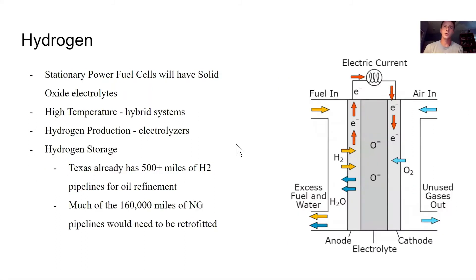Hydrogen is a renewable fuel that can either be burned or used in a fuel cell to produce power. It can be made from natural gas through steam reforming, but the current natural gas supply is fracked and therefore not renewable. The best alternative to create renewable hydrogen is through electrolysis, given Texas' access to water from the ocean. Once produced, this hydrogen can be stored in current natural gas pipeline and storage systems with some modifications. Hydrogen power will come from solid oxide fuel cell hybrid systems, which combine a high-temperature fuel cell with a gas turbine and a Rankine cycle to achieve thermal efficiencies of over 75%. Texas already has 500 miles of hydrogen pipelines currently used for oil refinement, but much of the 160,000 miles of natural gas pipelines would need to be retrofitted to accommodate hydrogen.